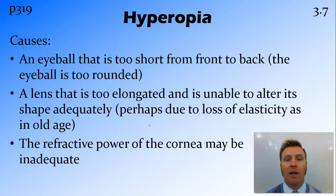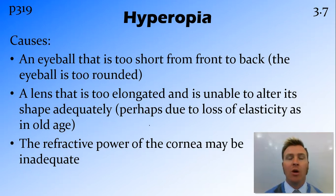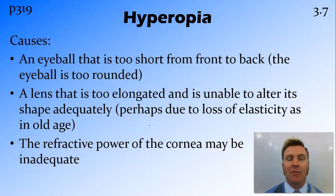Quite commonly, it can also be due to age. When you get older, your lens loses elasticity, meaning you have trouble getting the lens to maximum accommodation. When you're trying to focus on things close to you, the lens doesn't get curved enough and stays a little bit flat. Another reason is that the cornea may not have the correct refractive power — your cornea might be slightly the wrong shape.